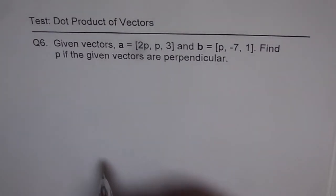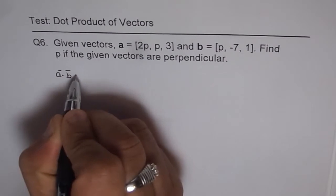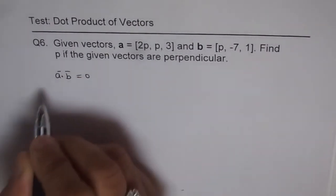Since A and B are perpendicular, A dot B is 0 and that helps to find the value of P. So what is A dot B?